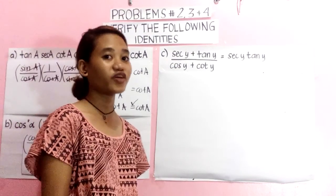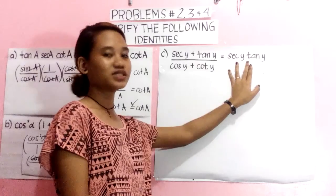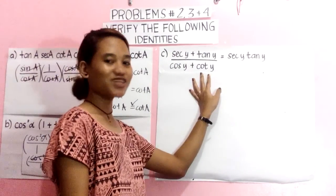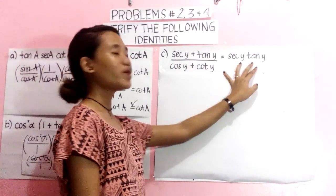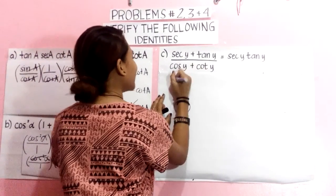We move to the third problem, which is sec Y plus tan Y over cos Y plus cot Y is equal to sec Y tan Y. We will cross-multiply it.